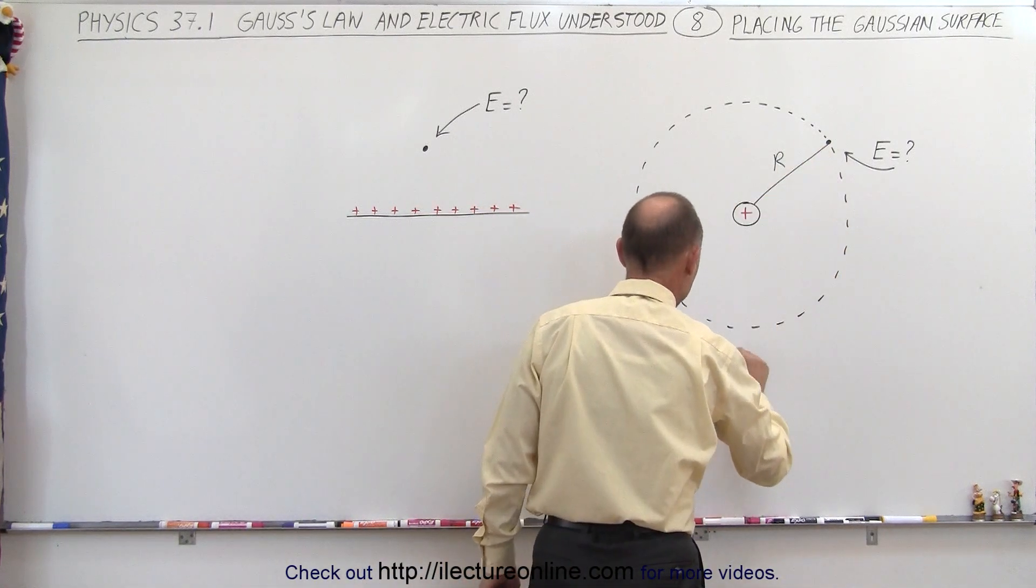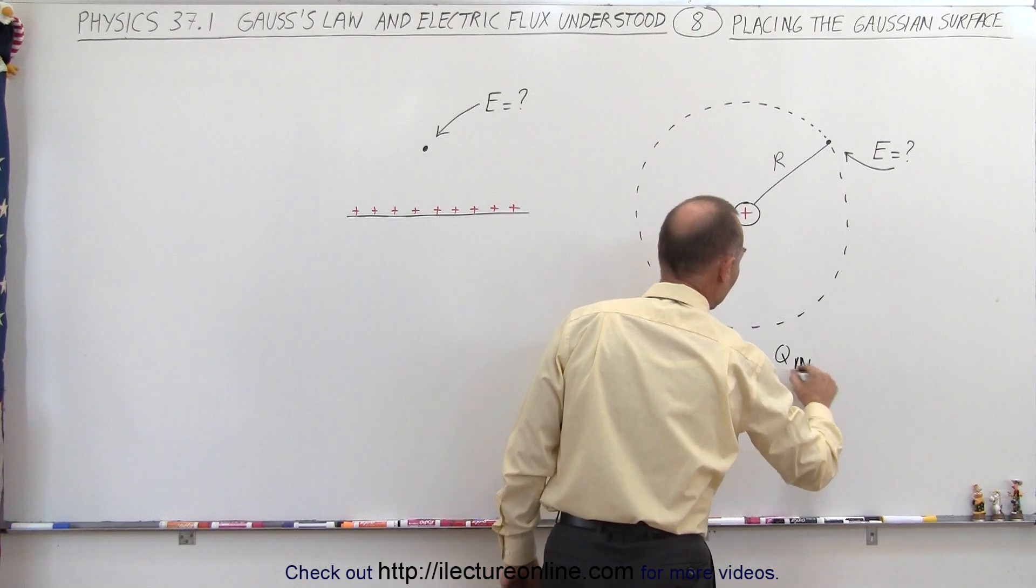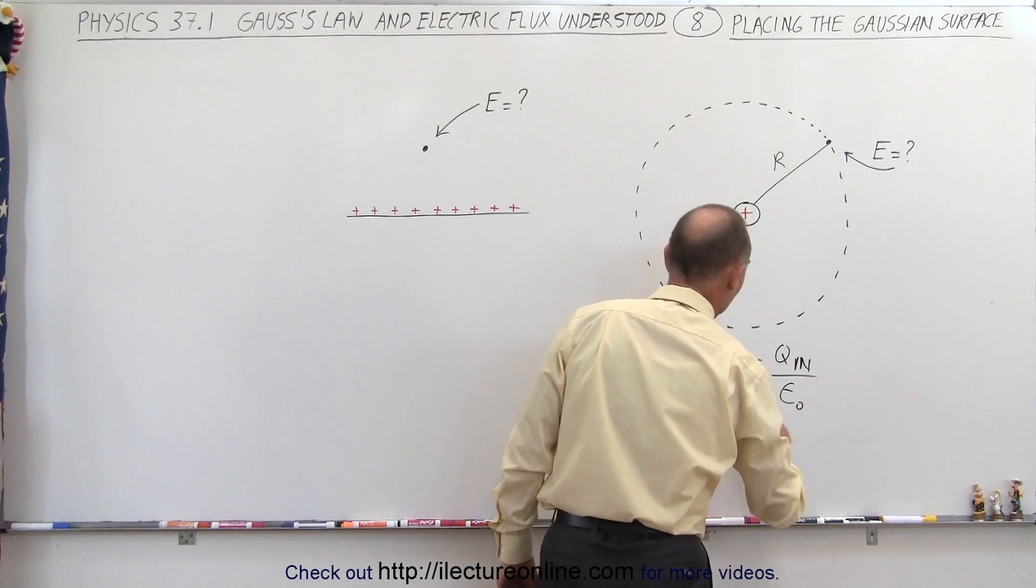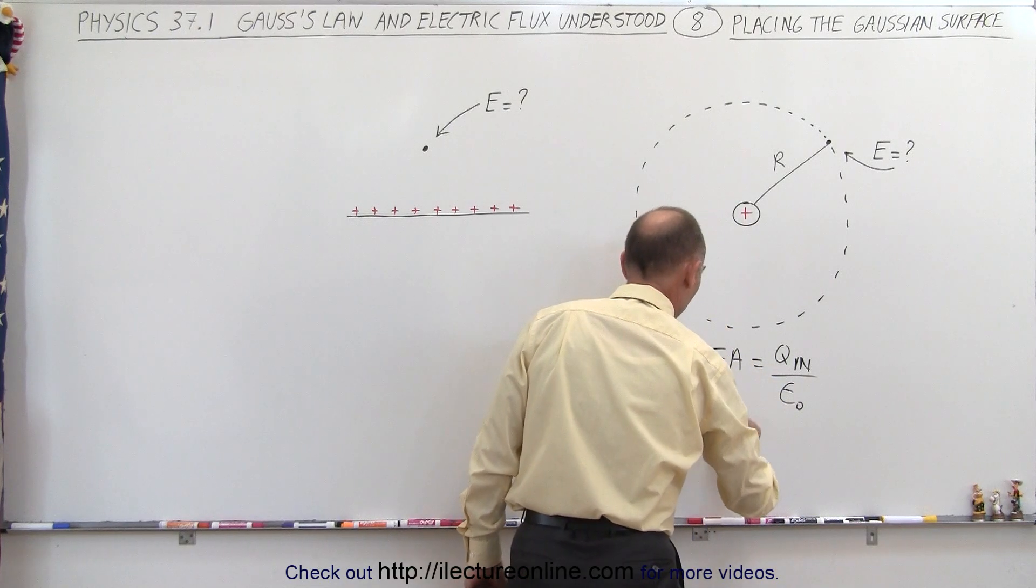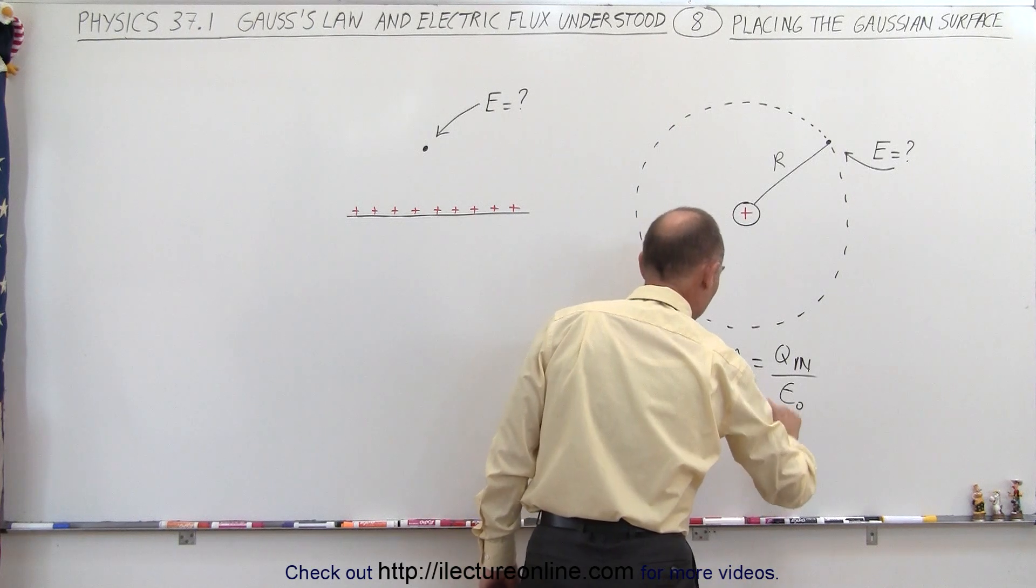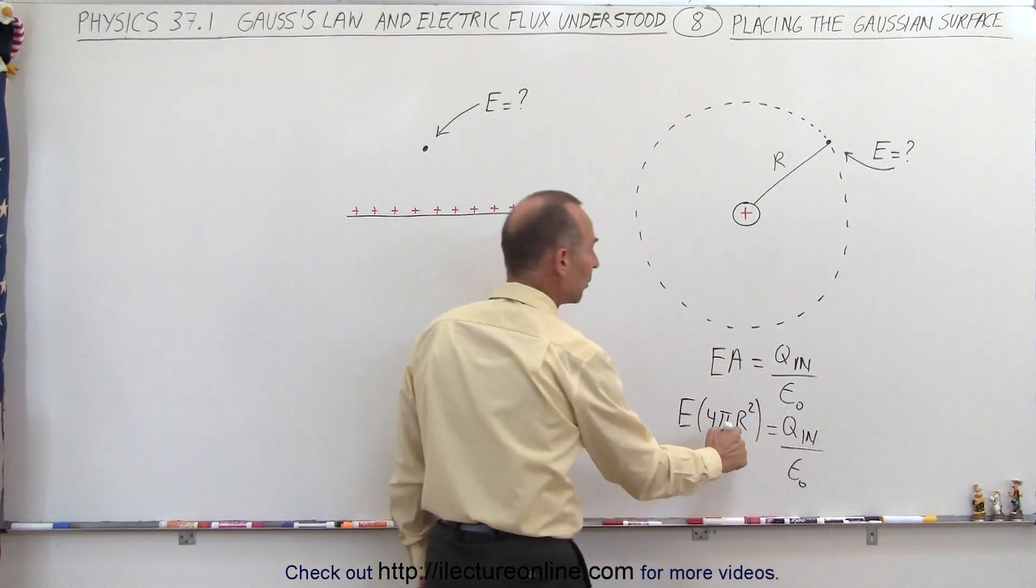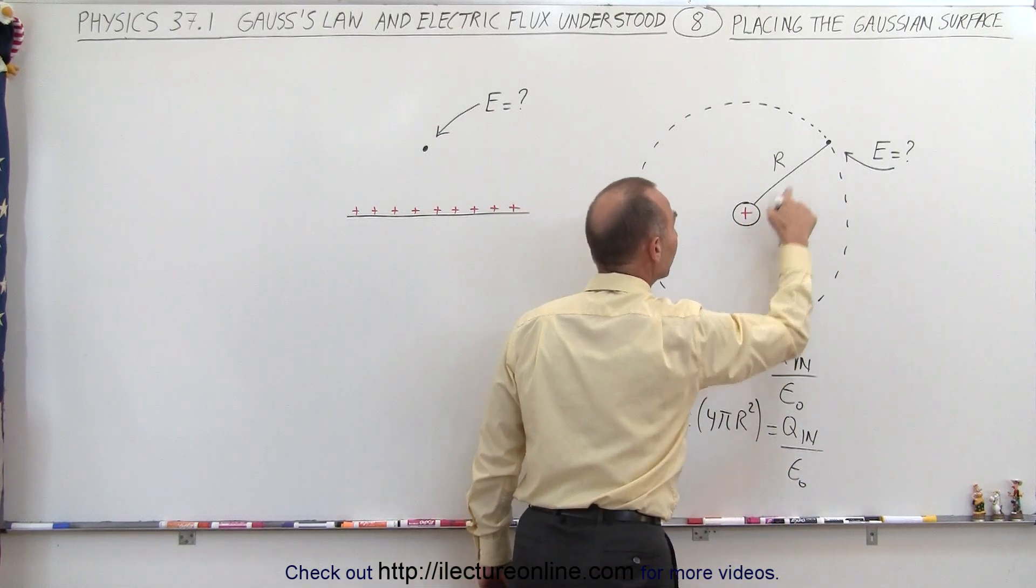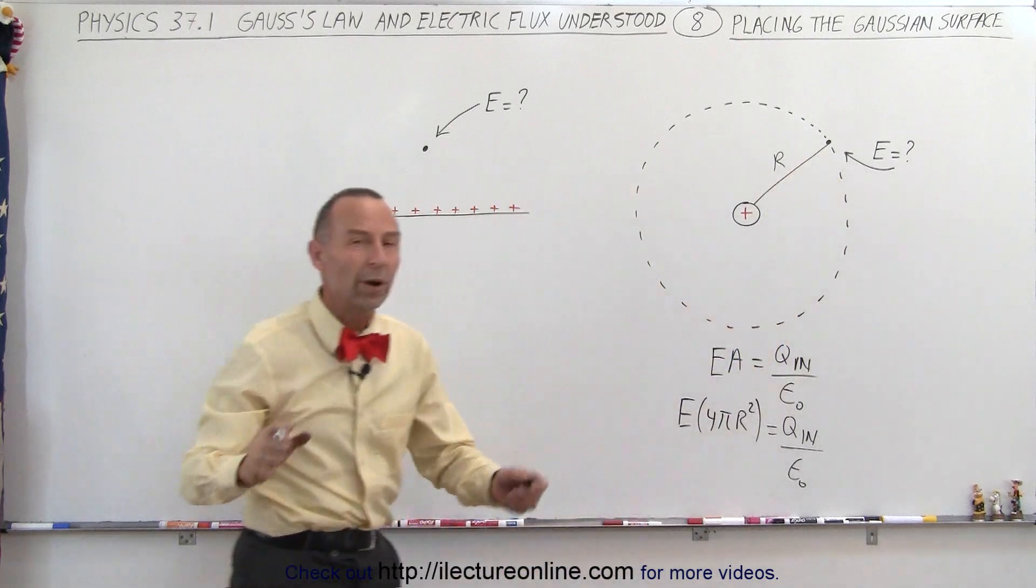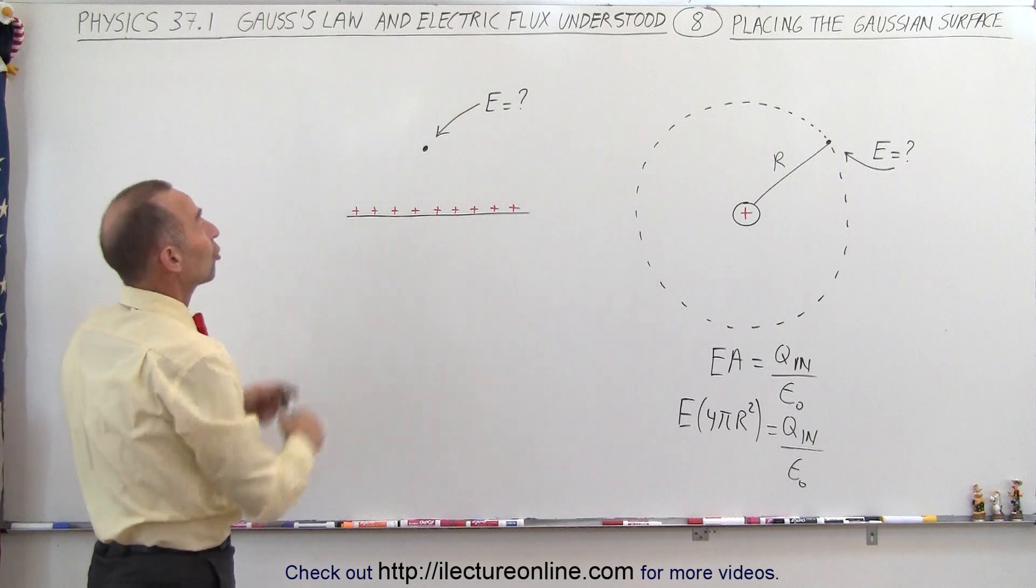And then I use the equation that E times A is equal to Q inside, divided by epsilon sub-naught. And of course, we know that A can be written as 4 pi R squared equals Q inside, divided by epsilon sub-naught. And then we realize that the radius of the Gaussian surface is the distance to the point of interest, where we want to know the electric field strength.